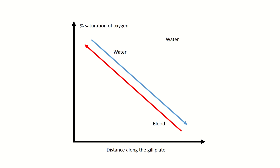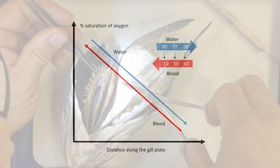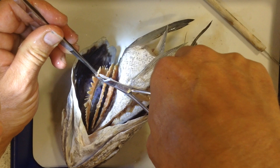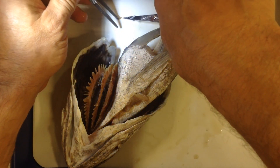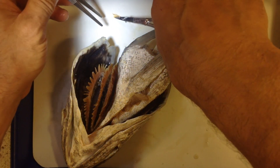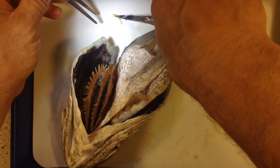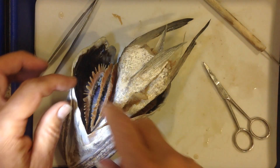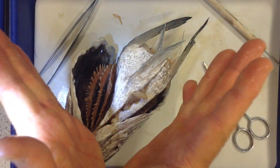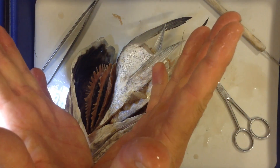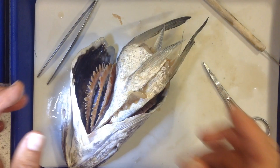Basically you have a high concentration of oxygen being extracted, much higher than you would if the blood and water were both going in the same direction - that's called a counter current. There are two layers here and they sort of fan out in a V shape, which gives you your counter current.